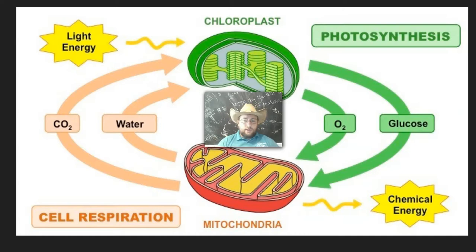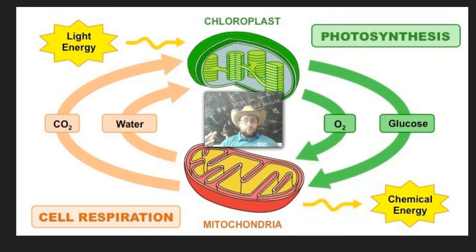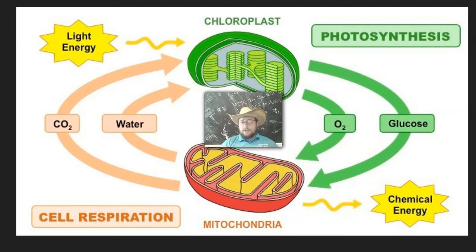Now, there are, of course, aerobic bacteria, which are ancestral causes of mitochondria, that do cellular respiration outside of eukaryotic cells. And there are also cyanobacteria that can do photosynthesis, and they are the evolutionary ancestors of chloroplasts. But for the most part, you can think of it as a process that these two organelles are doing back and forth.